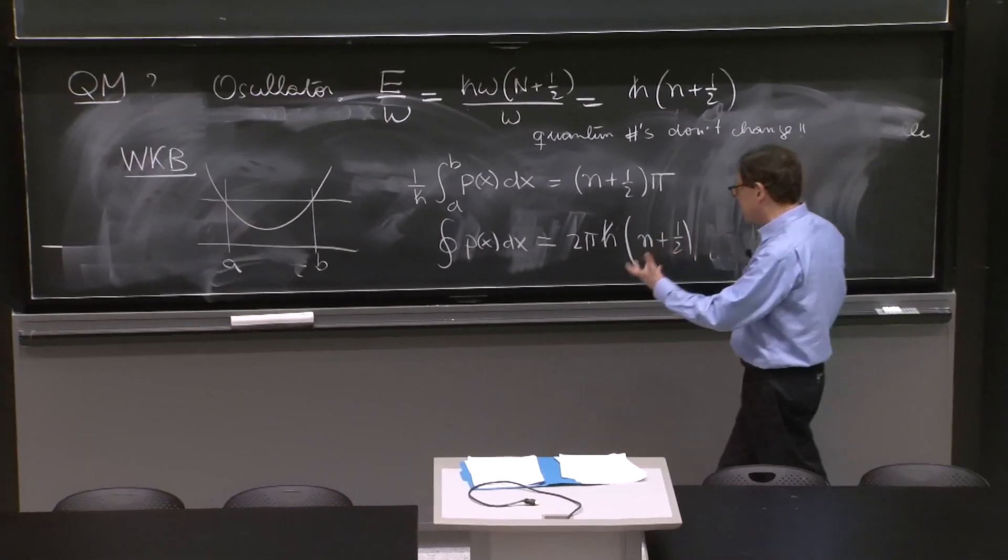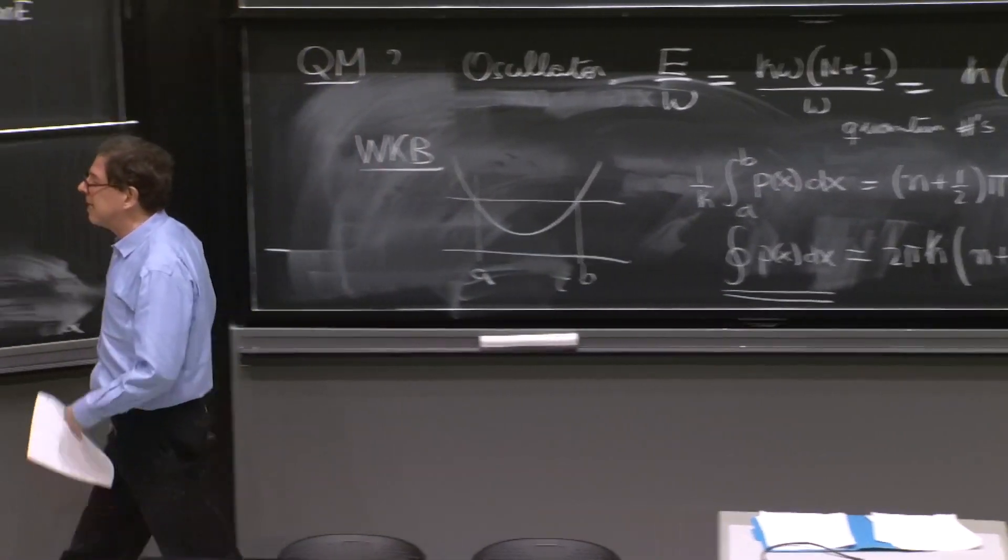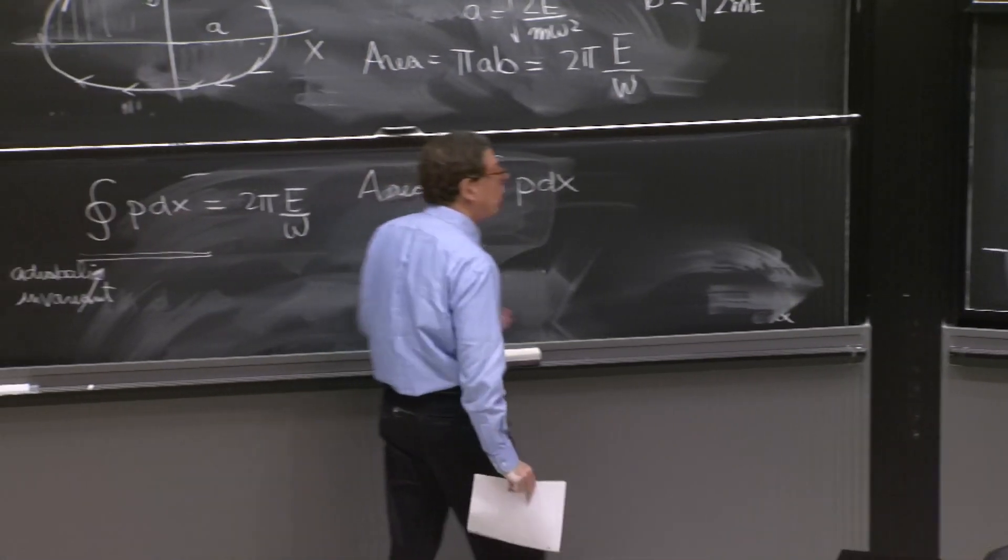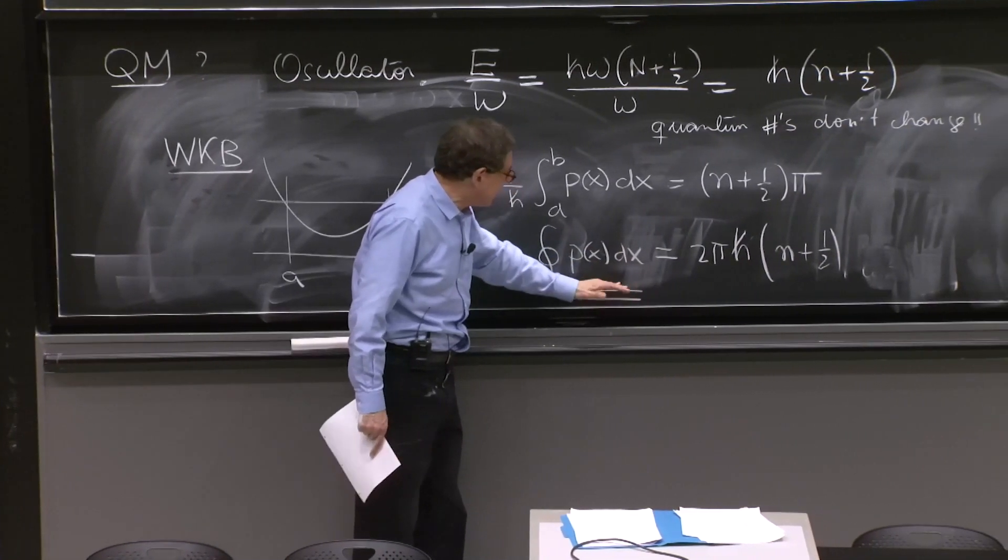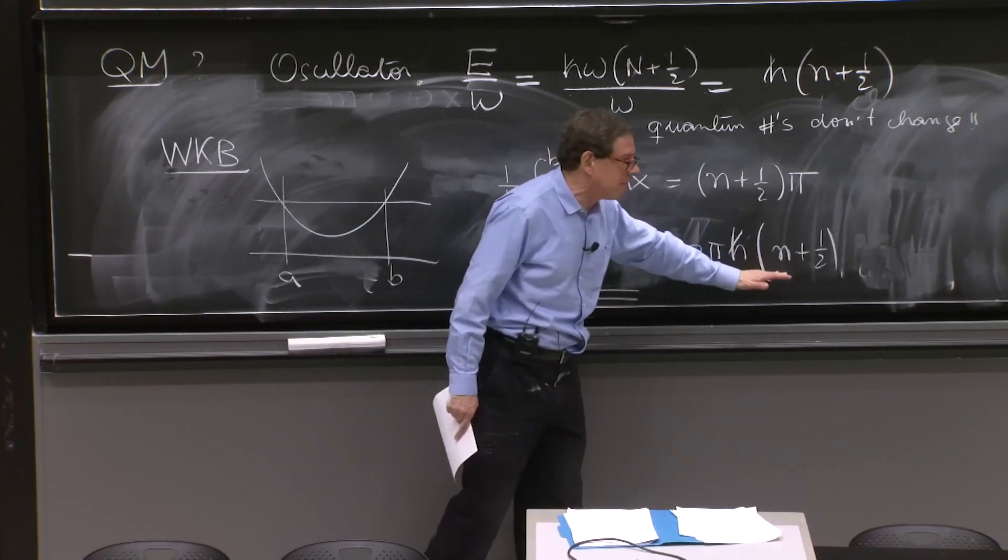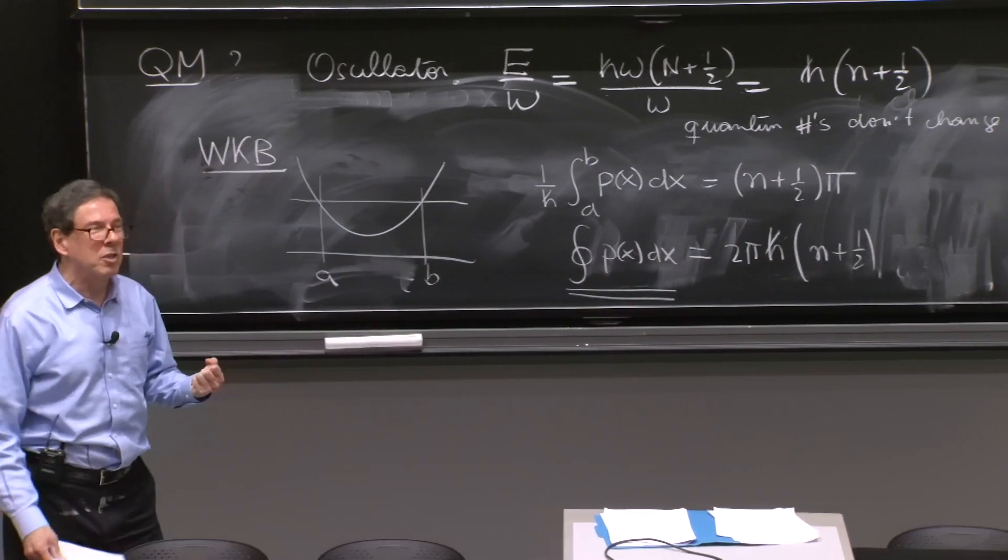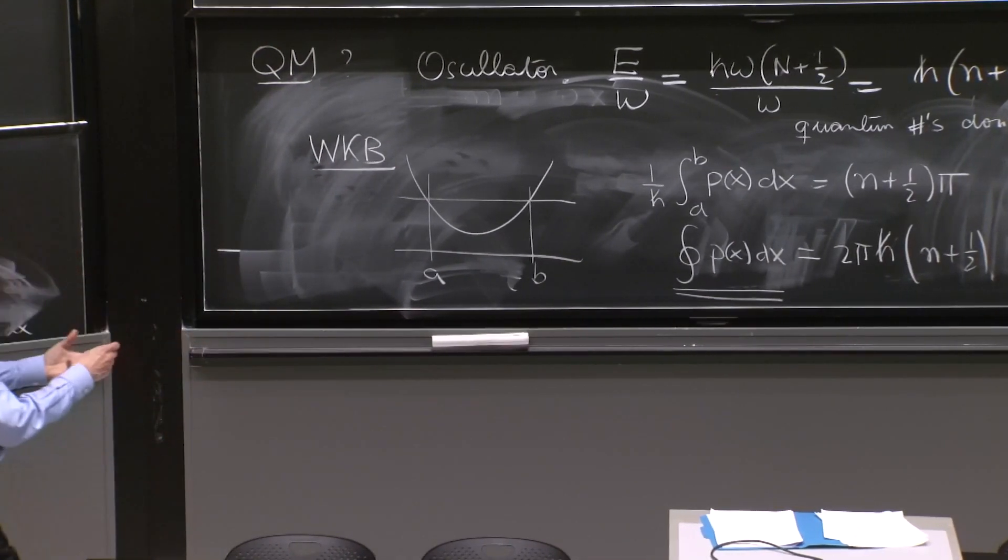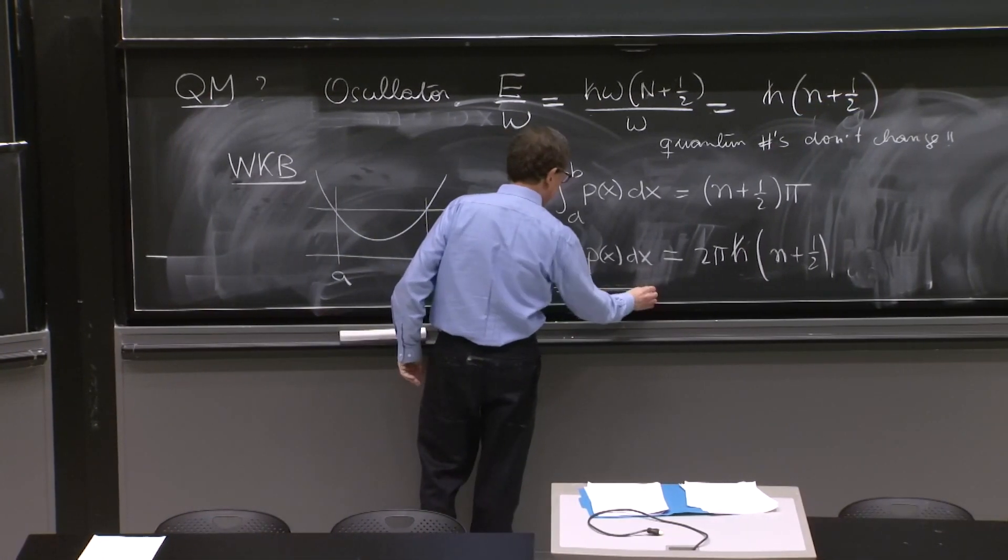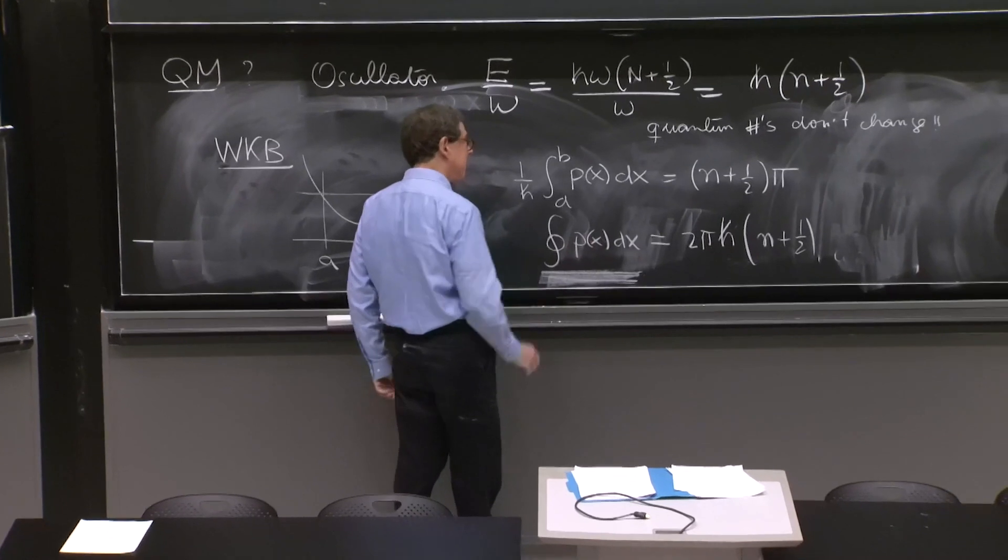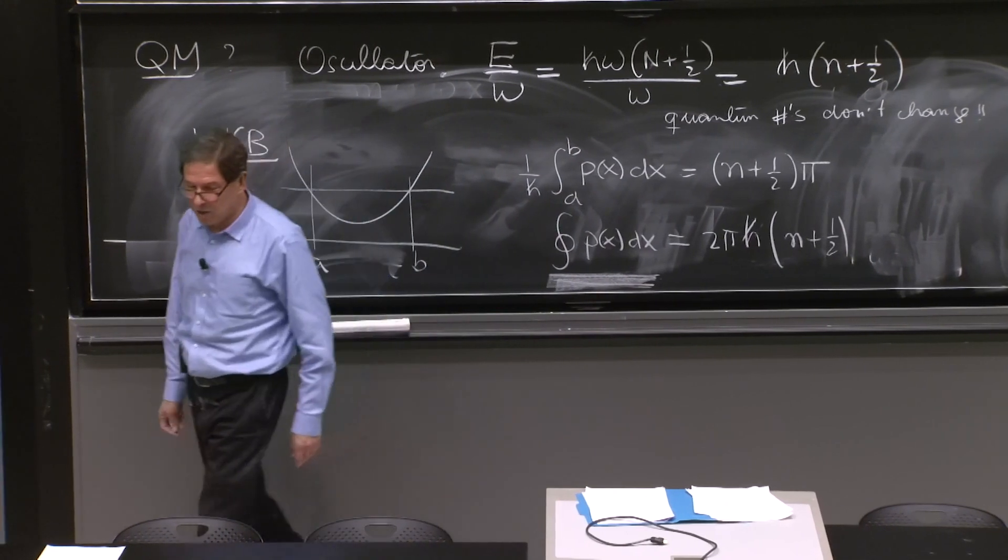You see the intuition that this quantity of classical mechanics that we said is the adiabatic invariant also shows in semi-classical quantization, telling you that that quantity, yes, doesn't want to change because, in fact, it represents a quantum number. So the WKB approximation is also reinforcing the idea that, first, this quantity, this integral over phase space, is an adiabatic invariant. And second, that it represents a quantum number that doesn't want to change.